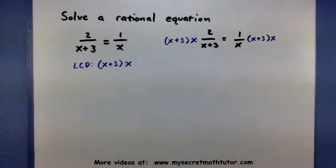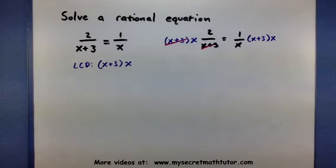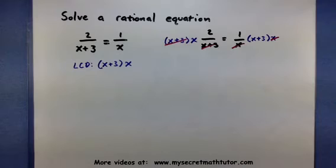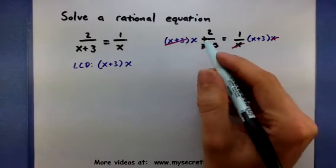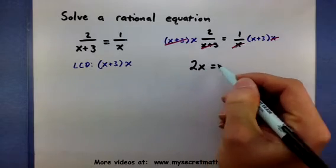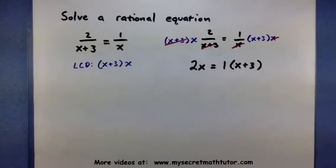When it multiplies on the left side, the x plus 3 on the top and bottom will cancel each other out. If we look at the right side, it's the x's that will cancel out. What's left over is 2 times x on the left and 1 times x plus 3 on the right.